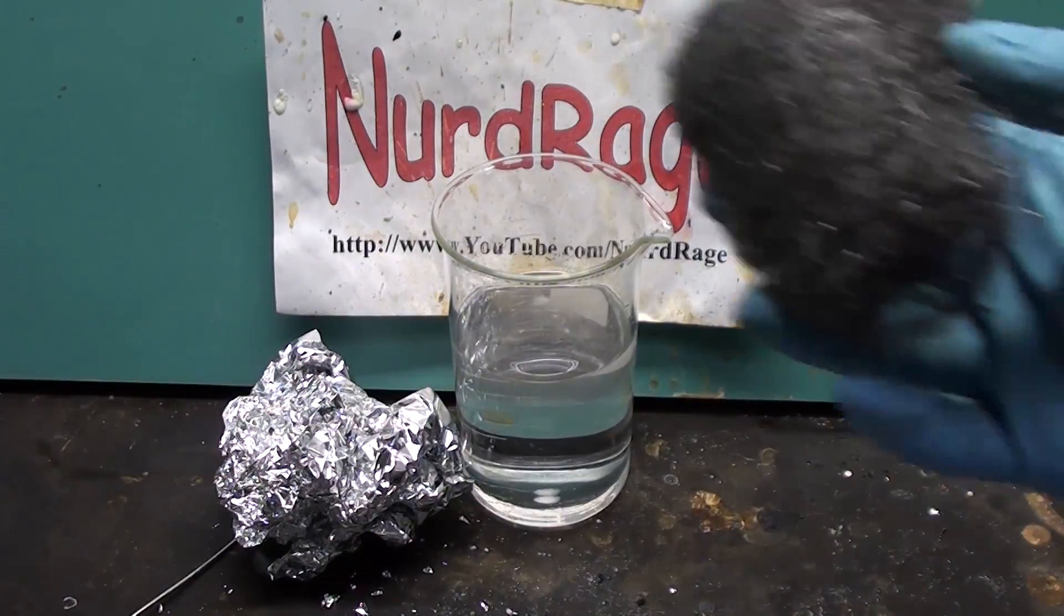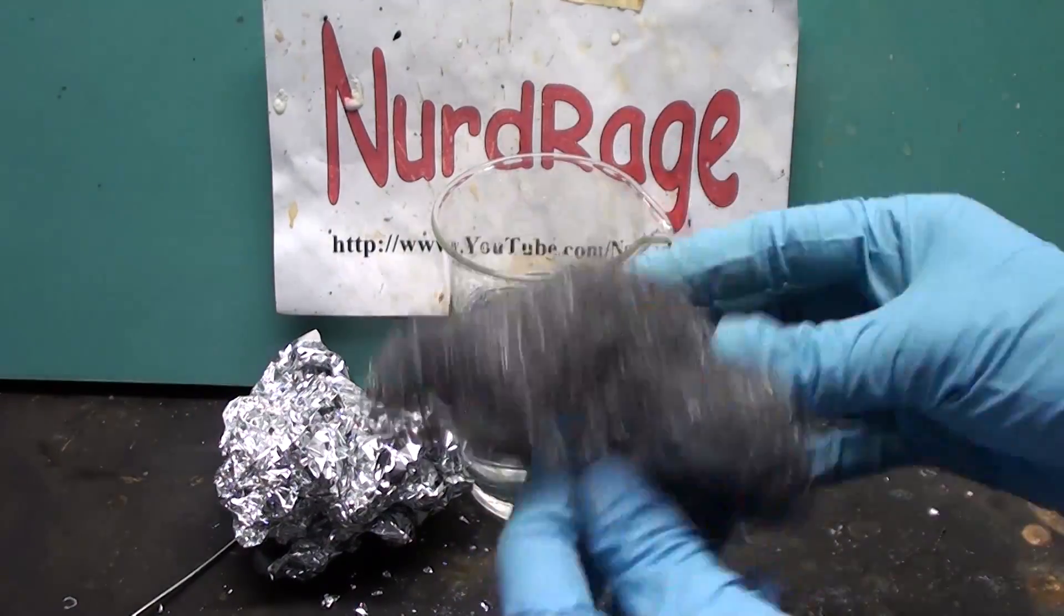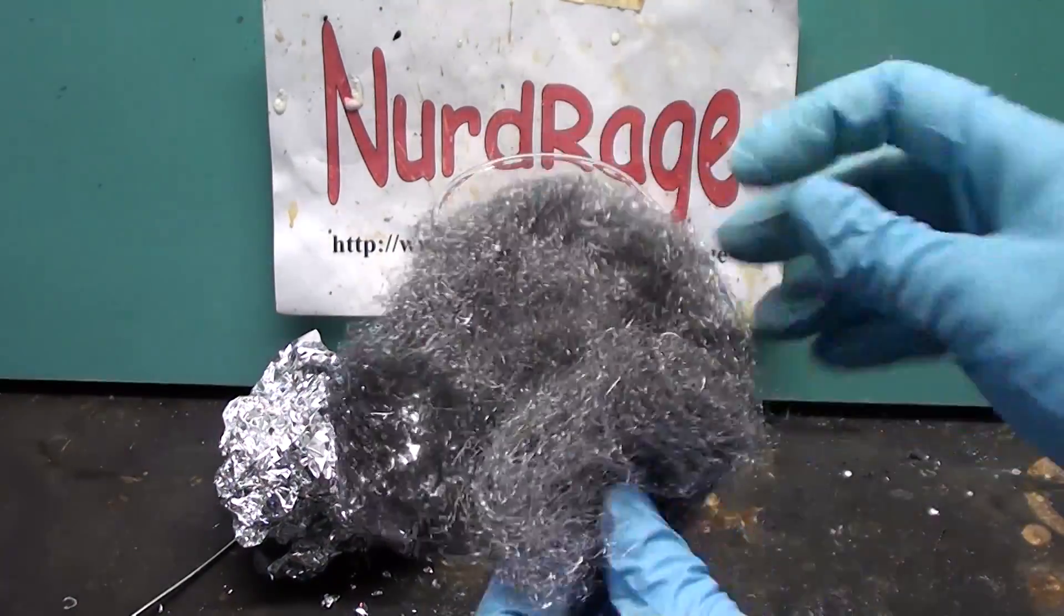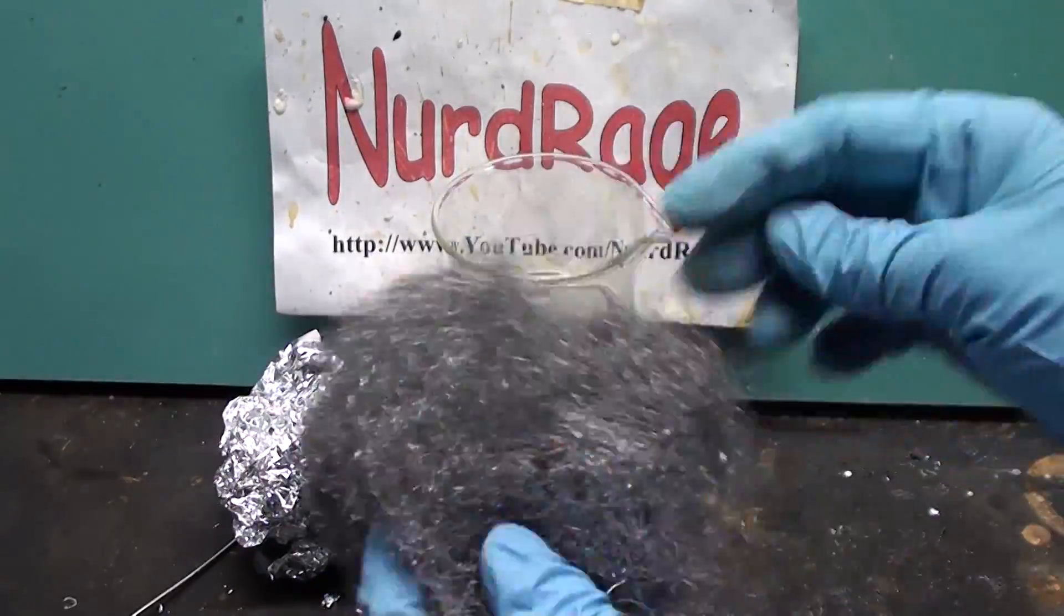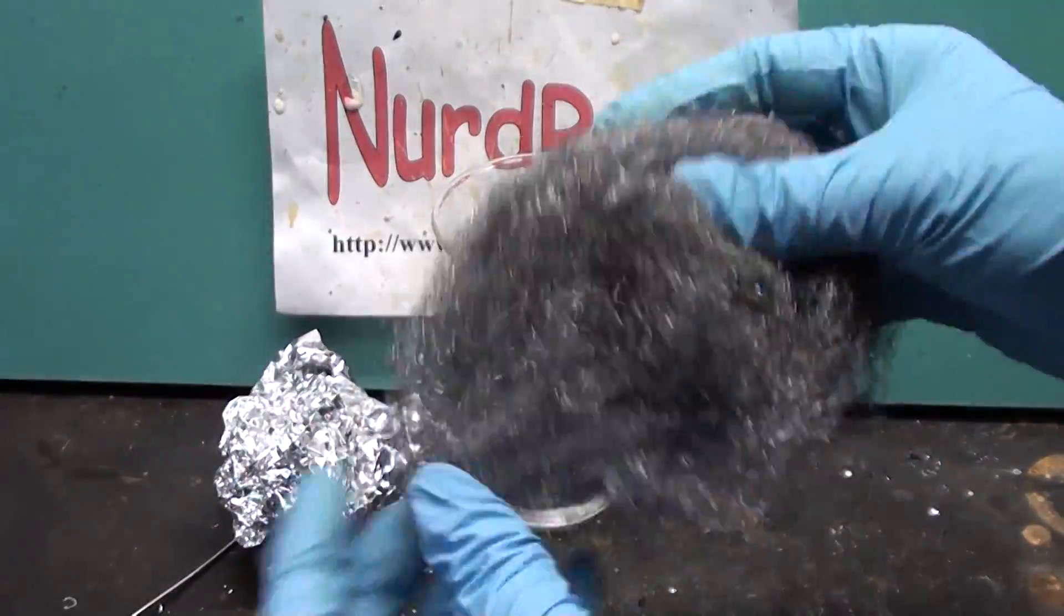Set that aside and now get some steel wool. Fluff it off a bit so it's slightly larger than the mouth of the container you're using. This will serve as our cathode or positive electrode.